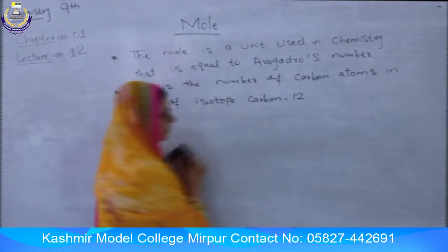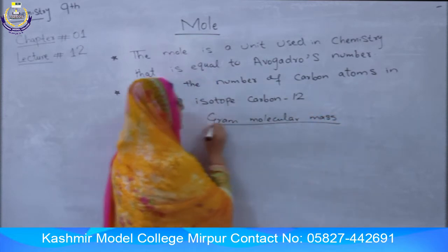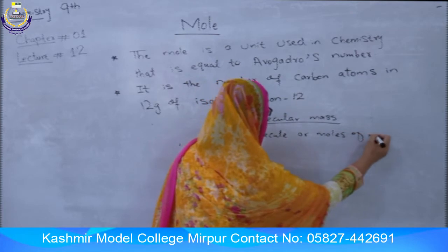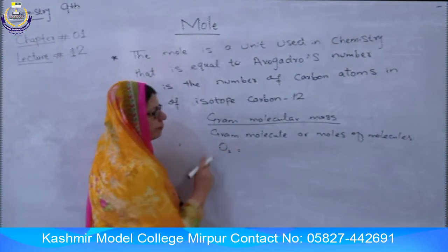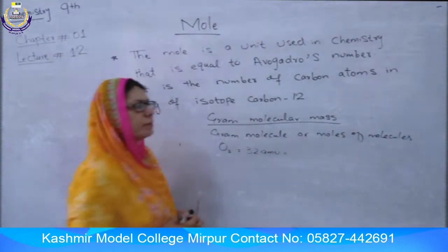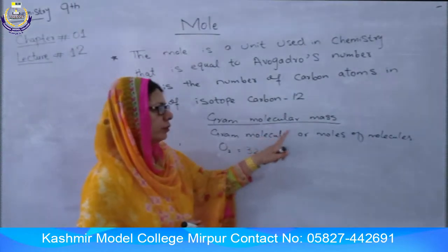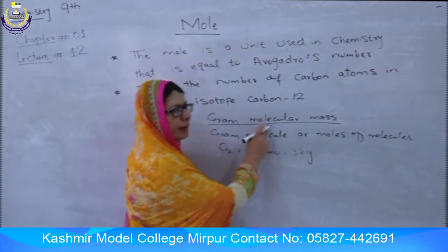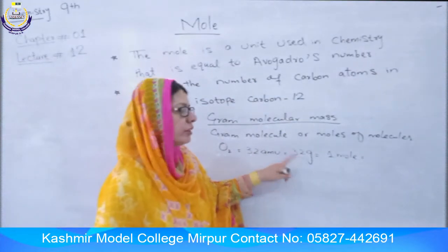Next is gram molecular mass, also called gram molecule, or moles of molecules. For example, oxygen molecule O₂ has a mass of 32 amu. When expressed in grams, it is the gram molecular mass, equal to 1 mole, containing 6.022 × 10²³ molecules of oxygen.